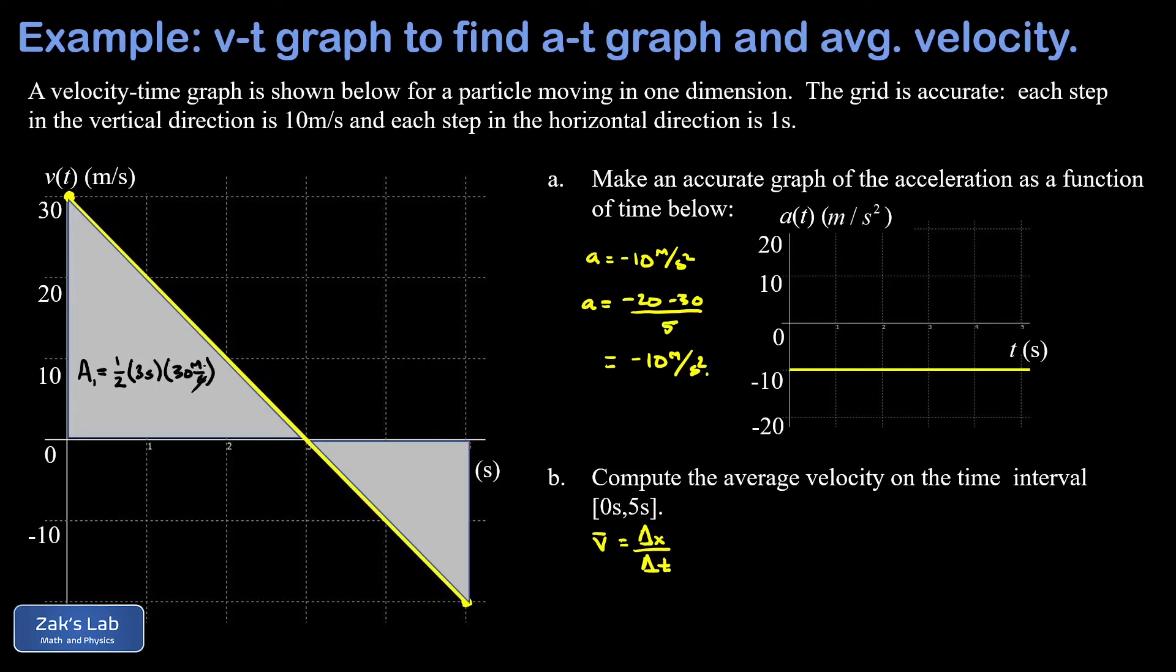Notice that the units work out for us. I end up with meters for this displacement, and again, it counts as positive. So three times 30 is 90, divided by two, and I get 45. So I get positive 45 meters for the contribution during that part of the motion.